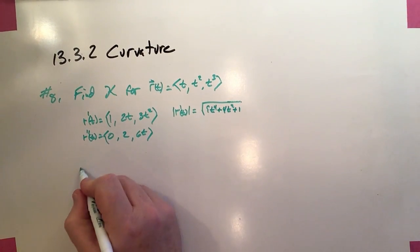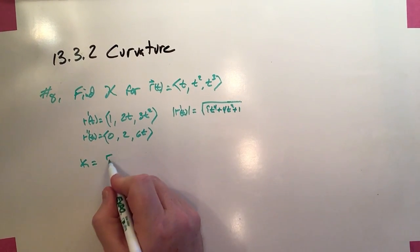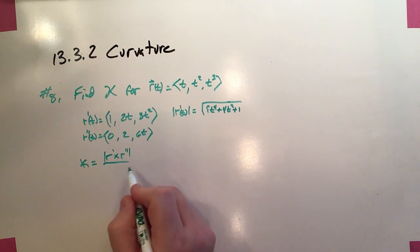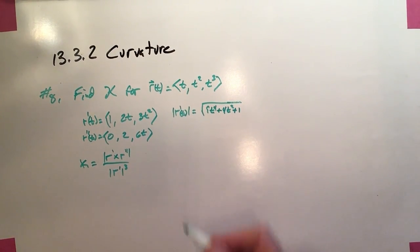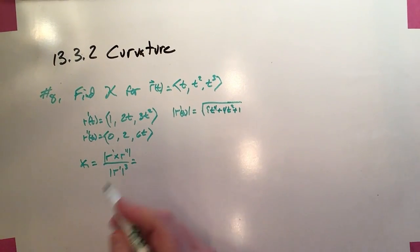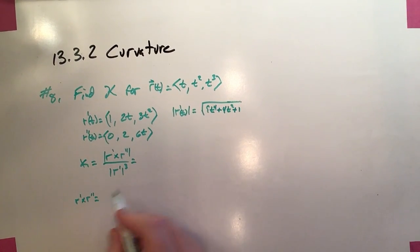And then we want to go ahead and solve for curvature by taking the magnitude of r prime crossed with r double prime and dividing it by the speed cubed. Okay, well, let's first take a look at that numerator, that cross product.